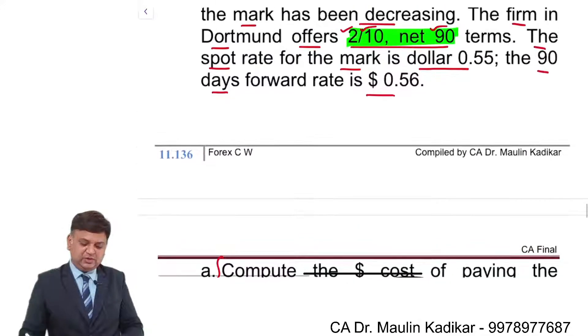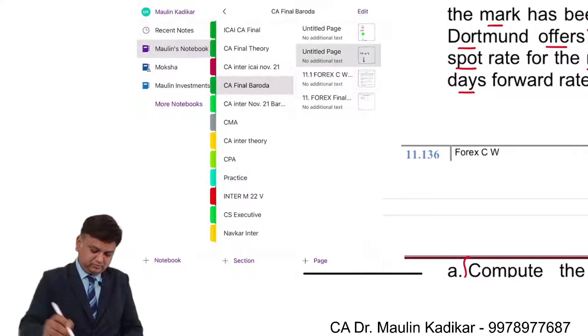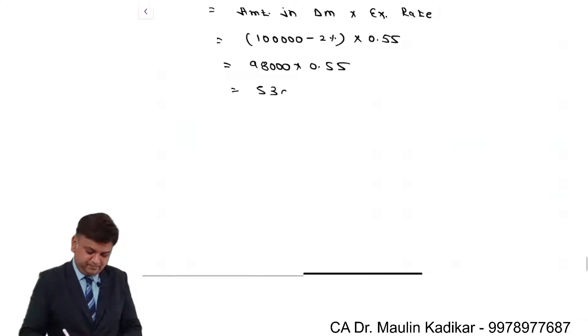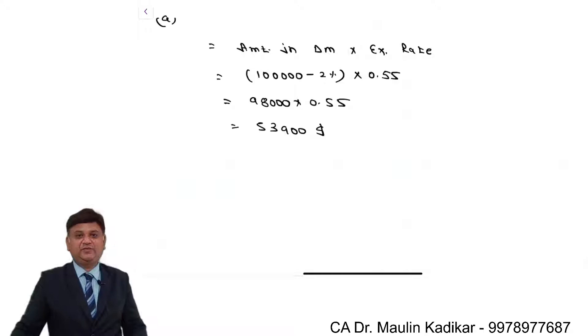When we will make payment on 10th day, exchange rate is not given, so we assume that it is 0.55. For A, it is amount in benchmark currency into exchange rate. 1 lakh dutchmark is a consideration minus 2 percentage. So it is 98,000 dutchmark into 0.55 dollar per dutchmark. In that case it comes to $53,900. That is the way the answer of A question can be found.